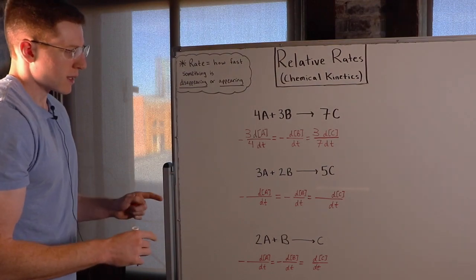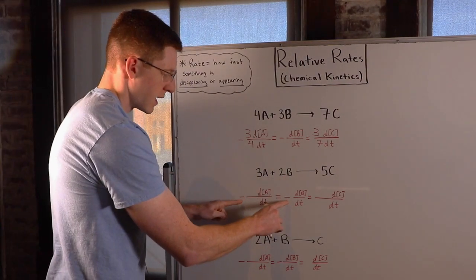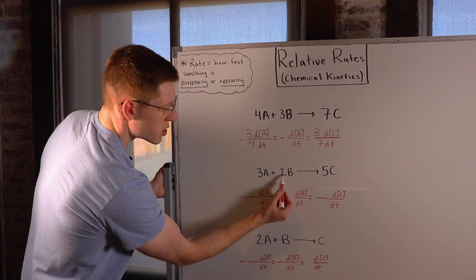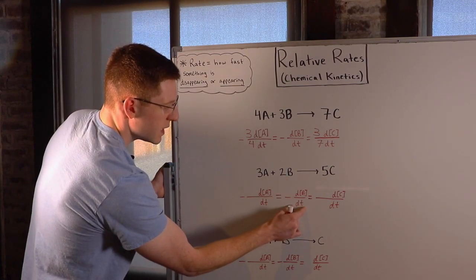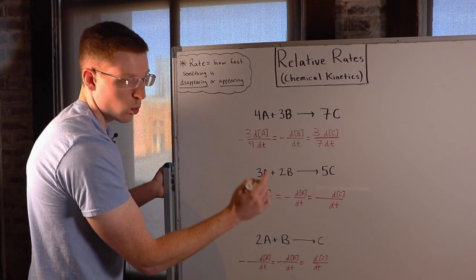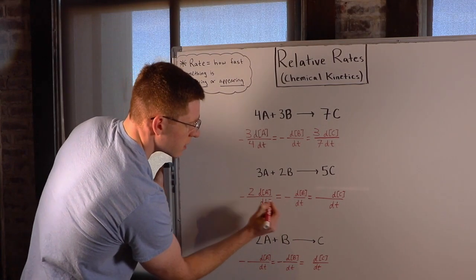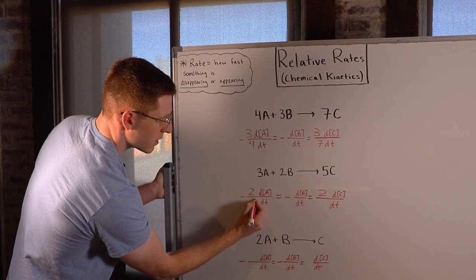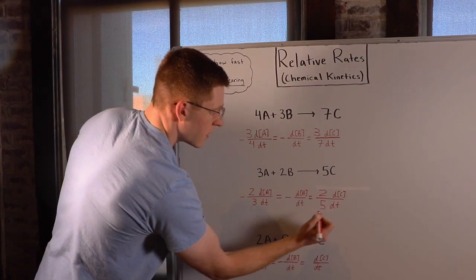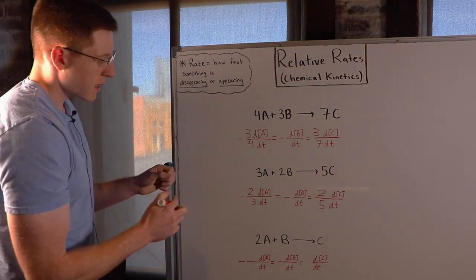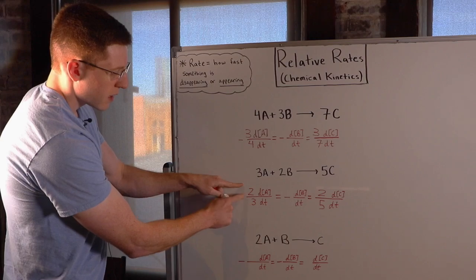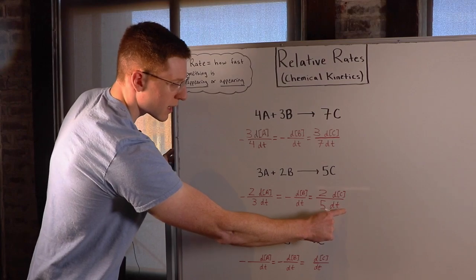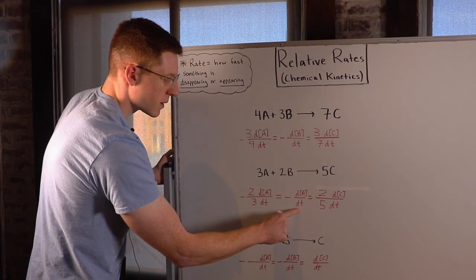For the next example, the reactants again have negative signs in front of their relative rate terms. The lowest stoichiometric coefficient is 2, so B is going to have an invisible 1 in its denominator. I put this 2 in the numerators of the other terms, then place 3 in A's denominator and 5 in C's denominator. This means A is disappearing 2/3 as fast as B is disappearing, and C is appearing 2/5 as fast as B is disappearing.